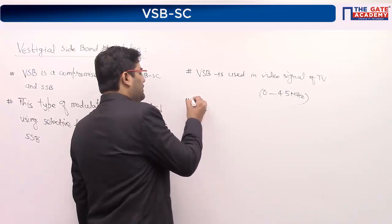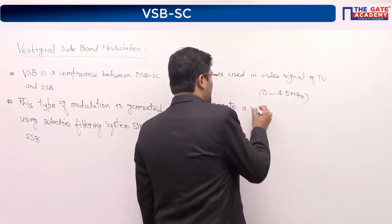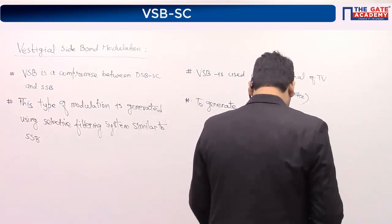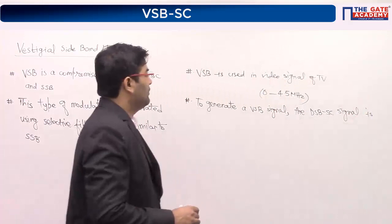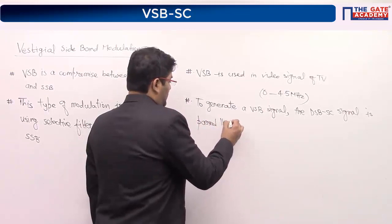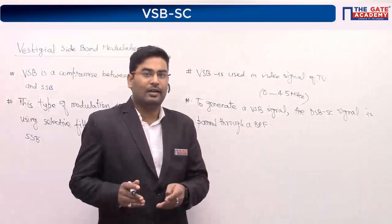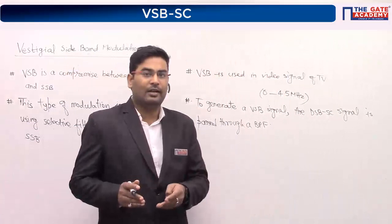To generate a VSB signal, the DSB suppressed-carrier signal is passed through a band pass filter — specifically, a practical band pass filter. Now let's have the block diagram for both the transmitter side and the receiver side.